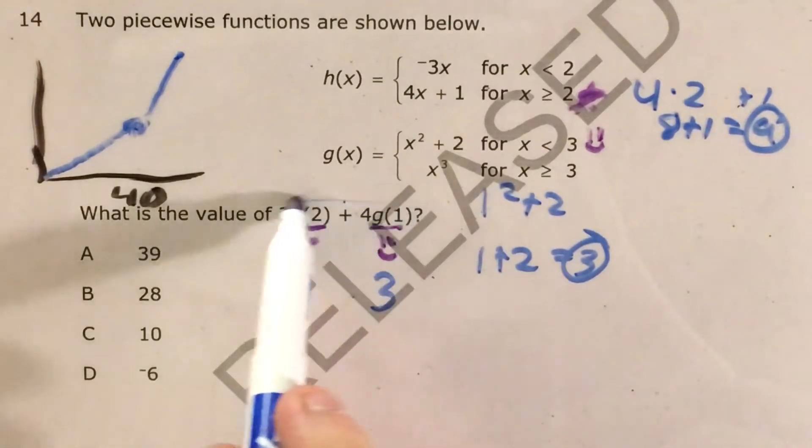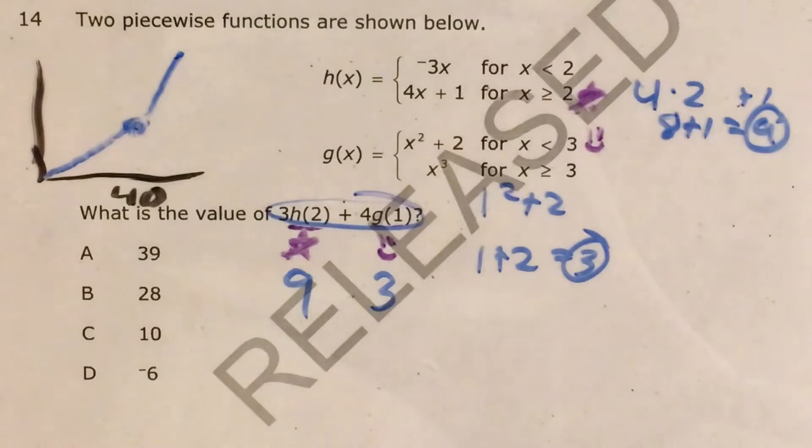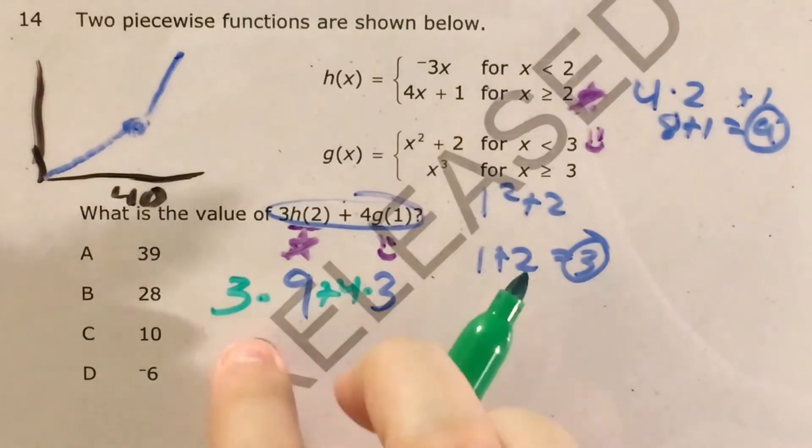All right, so now we need to figure out this whole expression. Because we weren't just trying to find H of 2 and G of 1, we had actually plugged them in to this expression here, where it was 3 times H of 2 plus 4 times G of 1.